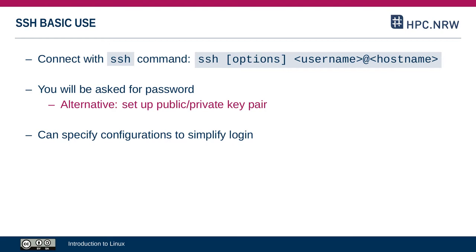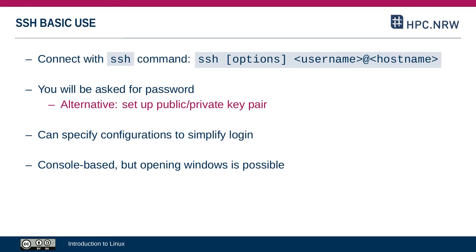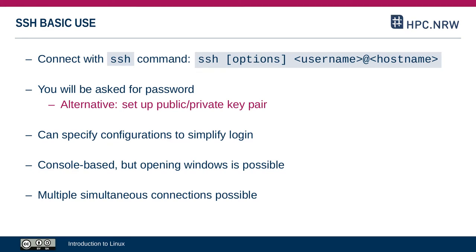In addition to typing all these options manually every time you connect, you can also specify configurations that are basically presets of various computers and your login details. By default, all you can access on the remote computer via SSH is the console — that's also one of the main reasons why it's so important to learn the console if you're working with clusters. There's also nothing stopping you from connecting to the same computer multiple times from different consoles. That's very practical if something breaks or gets stuck — you can open a second console and use tools like top to see what's going on.